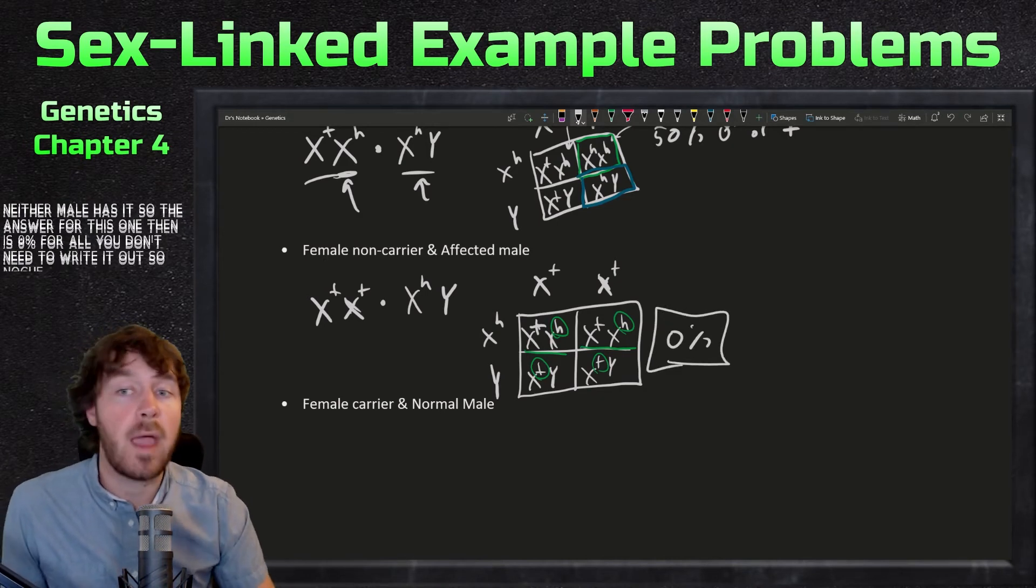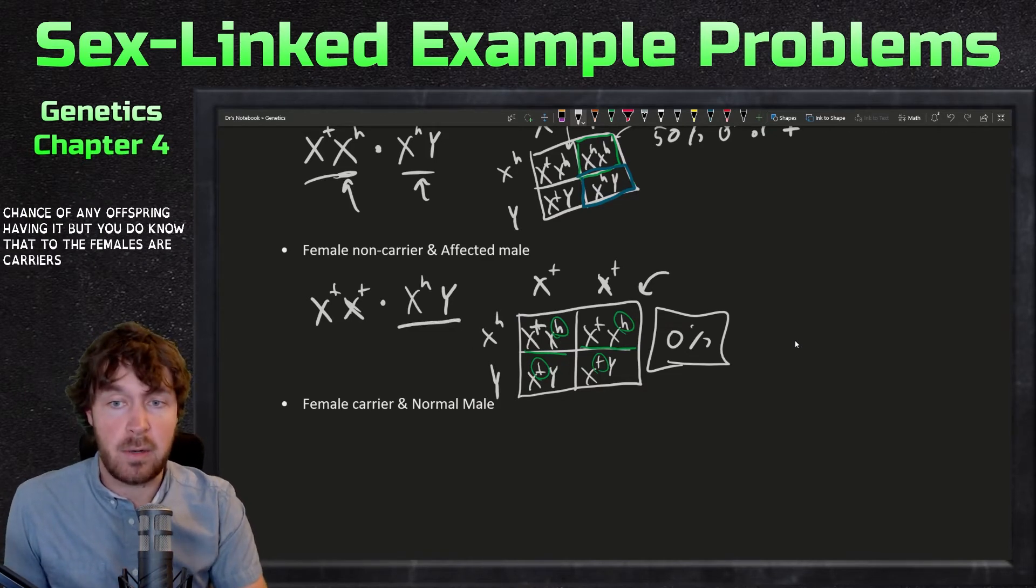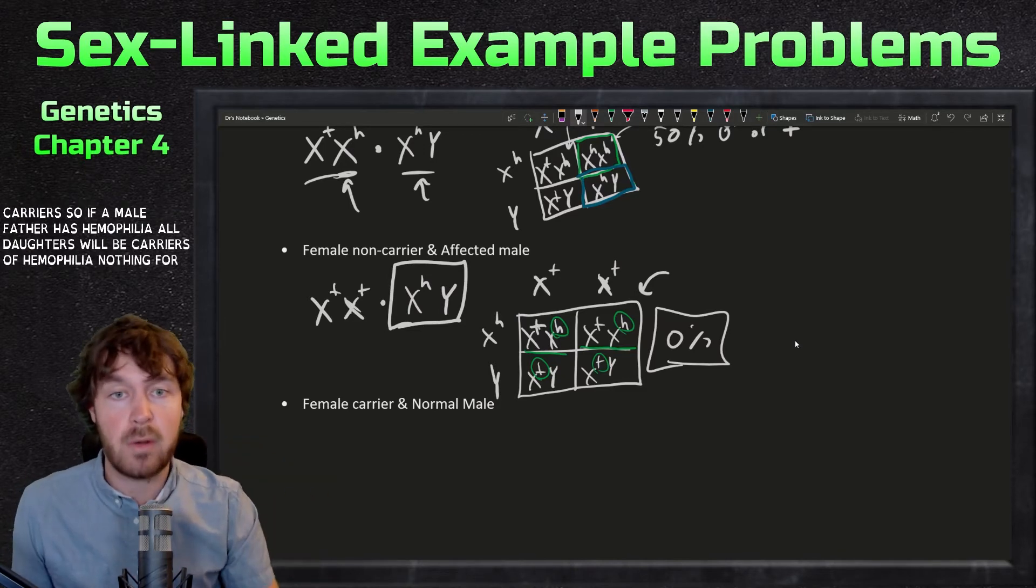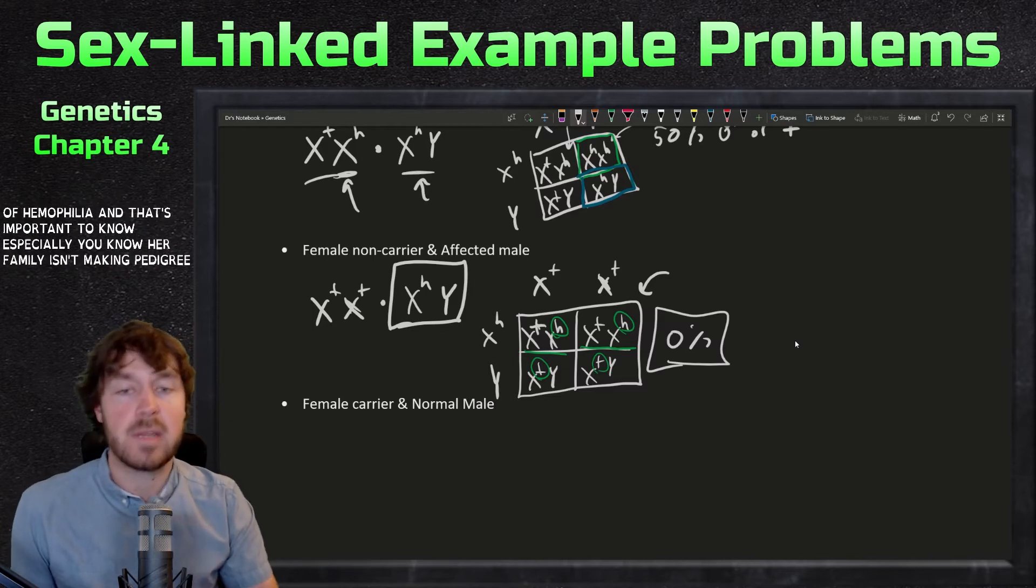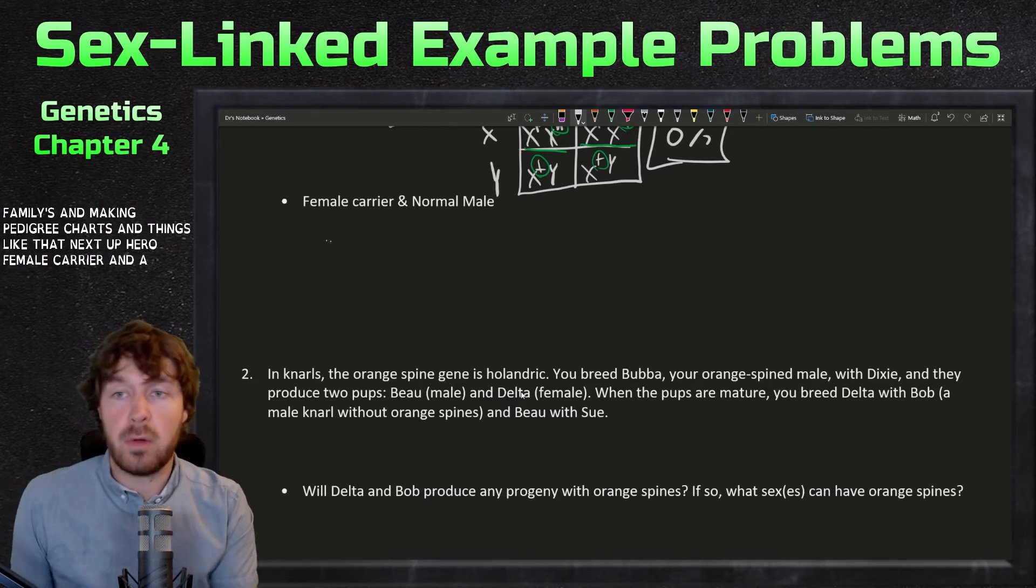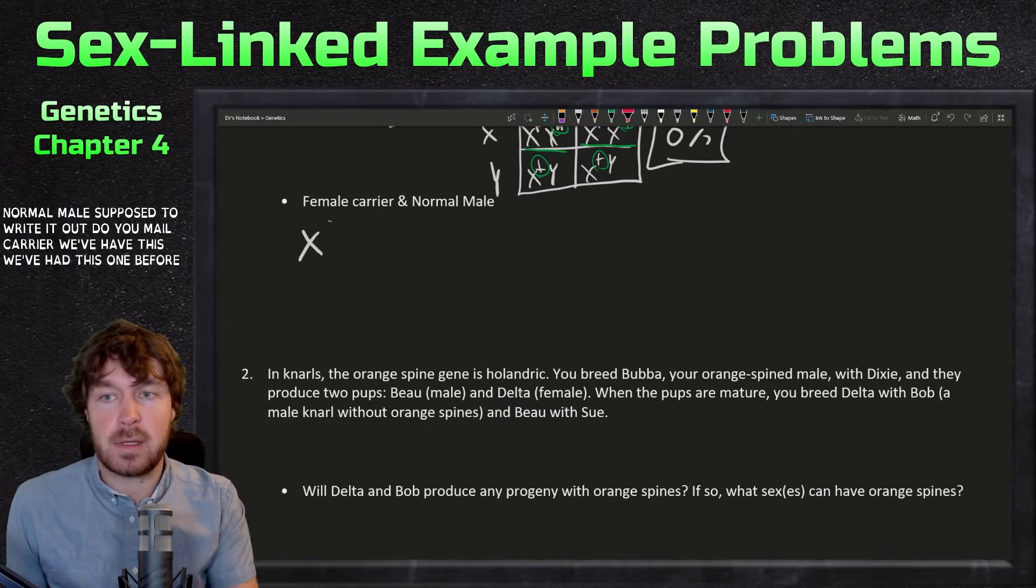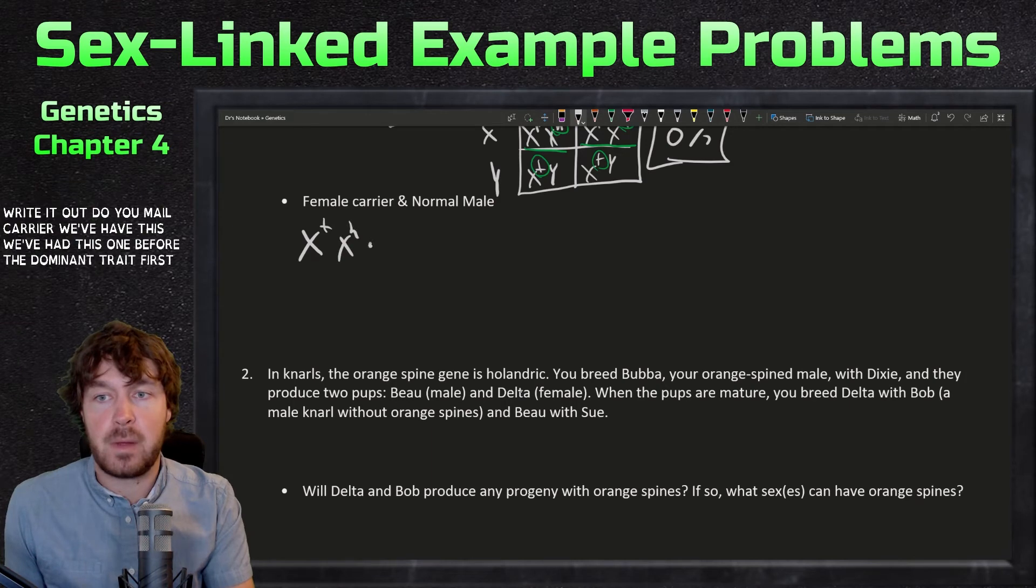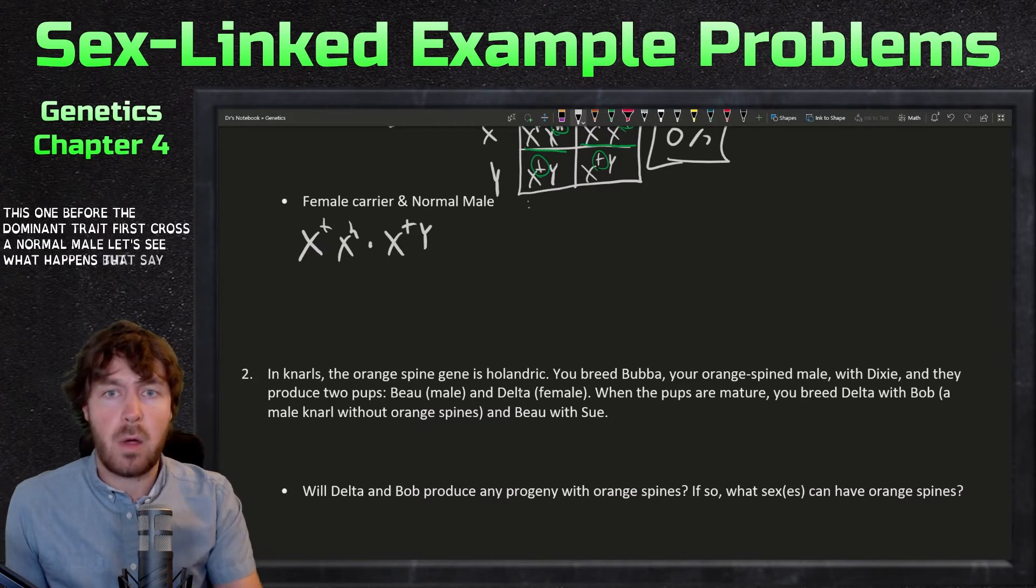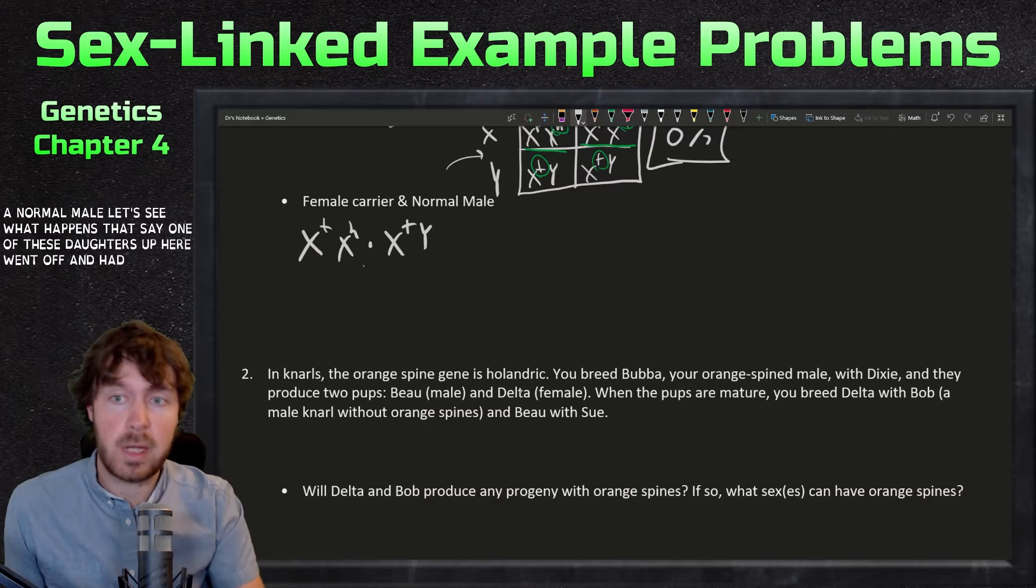The answer for this one then is zero percent for all. No chance of any offspring having it, but you do know that two of the females are carriers. If a male father has hemophilia, all daughters will be carriers of hemophilia, and that's important to know, especially for families and making pedigree charts and things like that. Next up: a female carrier and a normal male. Let's write it out. Female carrier, we've had this one before. Let's write the dominant trait first, cross a normal male. Now let's see what happens. Let's say one of these daughters up here went off and had children with a normal male.